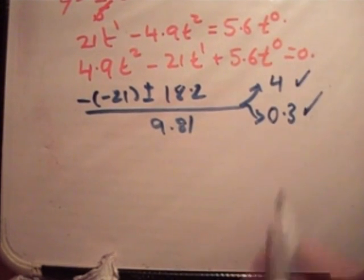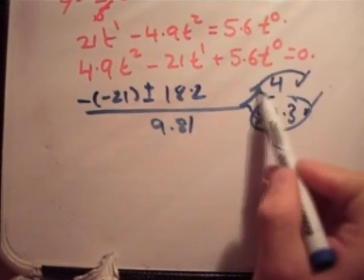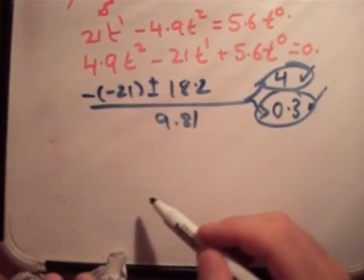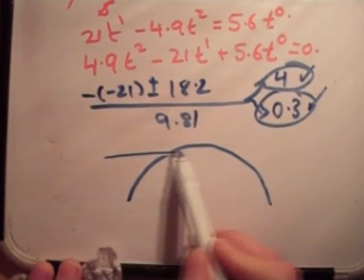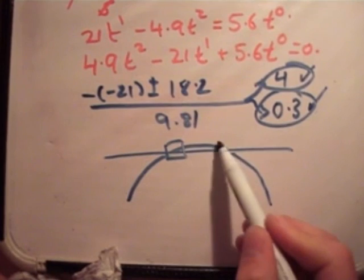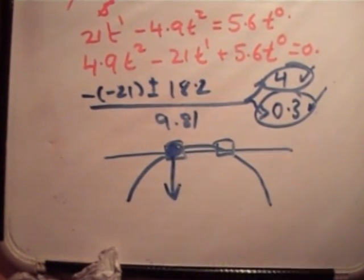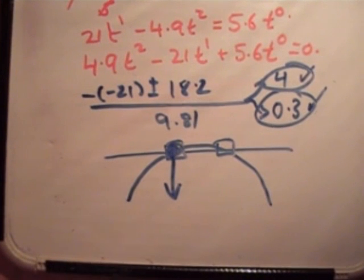Both those times are correct. So the bullet will hit the bird after 0.3 seconds and 4 seconds. Why is it two times? Why will it hit the bird twice? Well look, if that's the bullet's path and that's the bird's path there, they'll meet two times. The bird would have been shot here when it had fallen down. That's why you're getting two times.